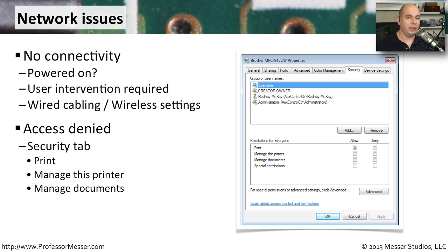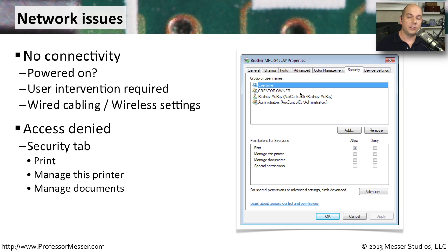You can also limit access to the printer through the operating system. If somebody is seeing an access denied message, check how the computer's security settings are configured. For instance, you can allow certain permissions for certain users — allowing them to print or not print, to manage the printer, or to manage documents on the printer.